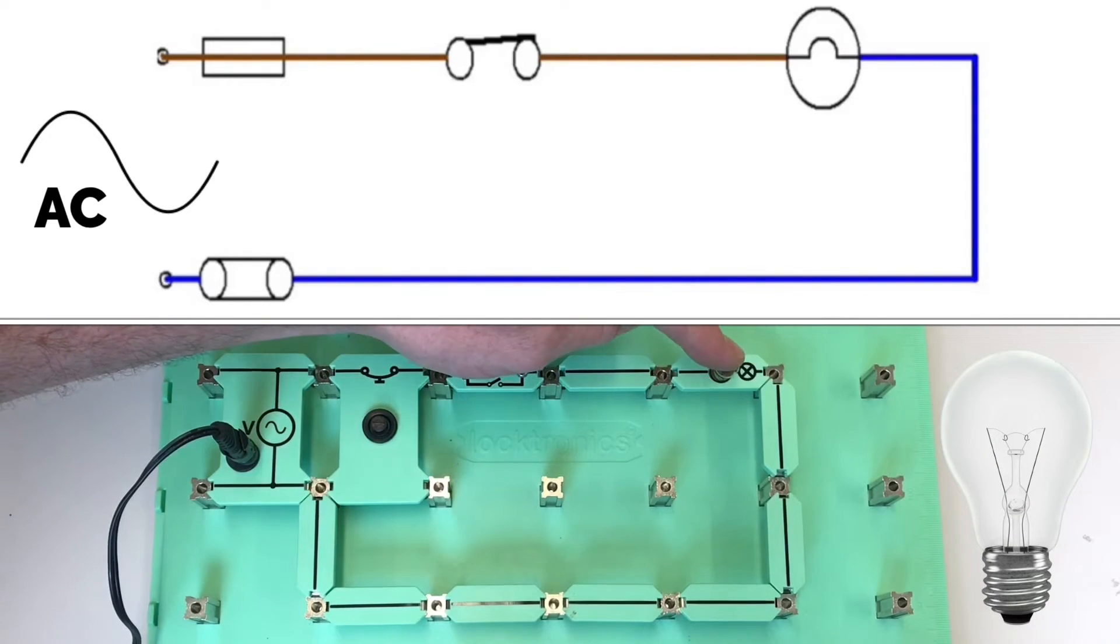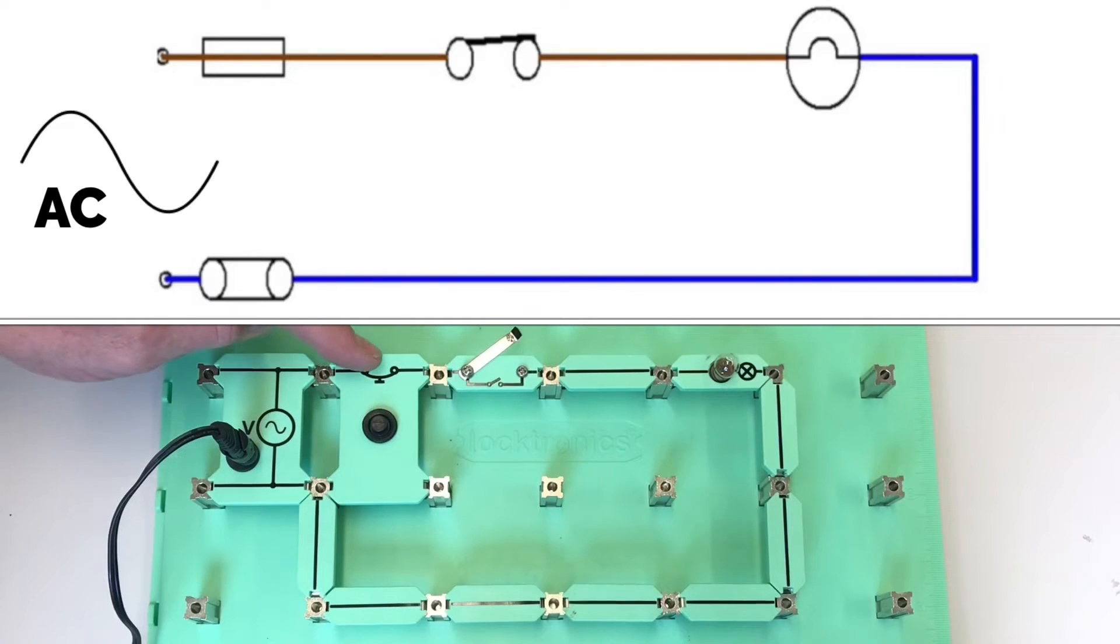So we have a load, means of control, we have overcurrent protection, and a source of EMF in our circuit. All elements required for our basic electrical science and principles, as well as wiring circuits within the electrical workshop.